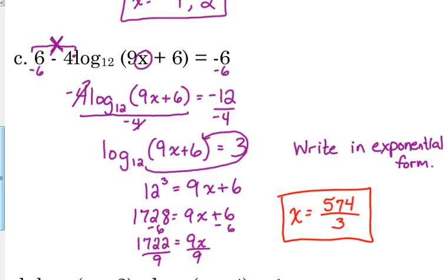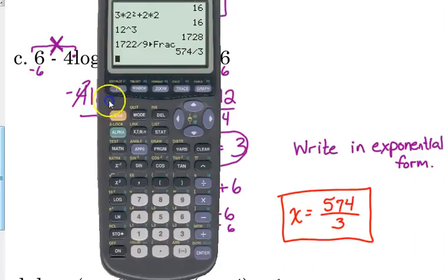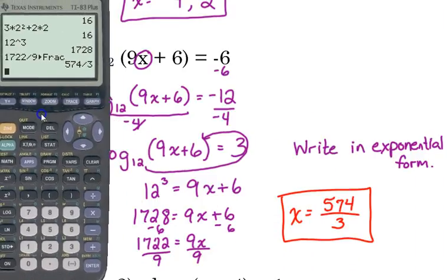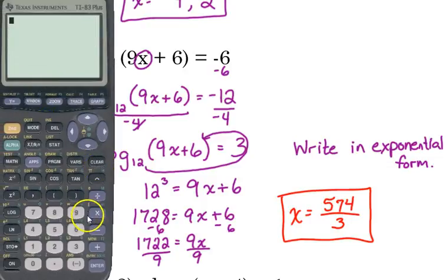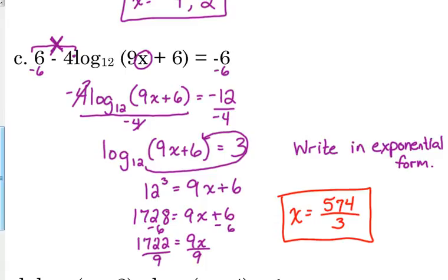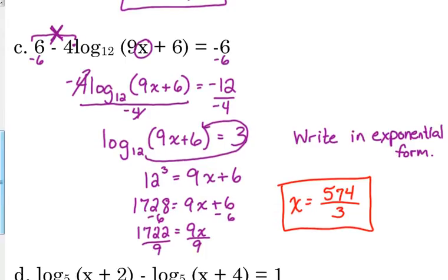And, you can always check it. Plug it back into the original. Type it in exactly how the problem appears. 6 minus 4 log, we've got to use change the base, 9 times x, 574 over 3, plus 6, divided by the log of the base, 12. And, that equals negative 6. So, we're good.